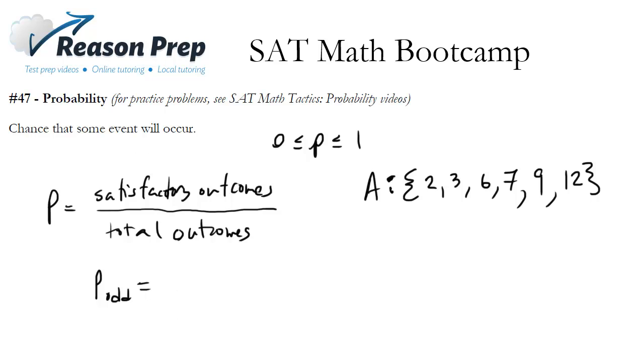Well first things first, how many odd numbers do we have? We've got 1, 2, and 3. So that is the number of satisfactory outcomes. That is the number of outcomes that satisfies what I'm looking for, in this case odd numbers.